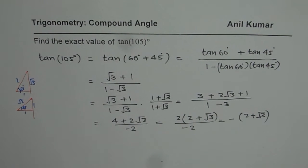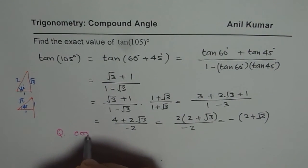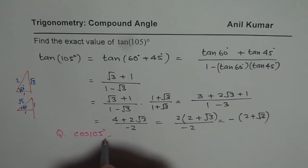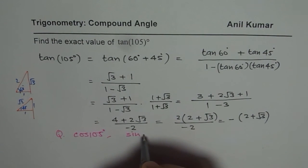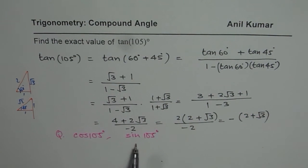Now we used compound angle formula to find this answer. I would like you to take this question as a test now. Figure out what is cos of 105 degrees and what is sin of 105 degrees. Find that out and check if their ratio gives you the same answer or not. I hope that helps. Thank you and all the best.